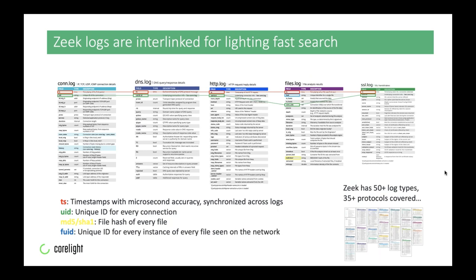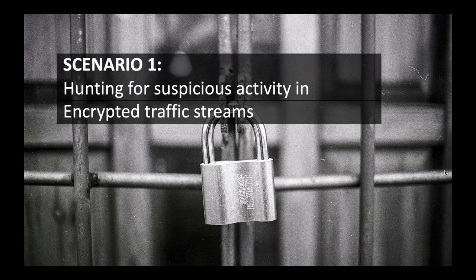Zeek is an interlinked logging framework - it's connection-oriented. It looks at network sessions and connections, generates logs, and stamps those connections with unique IDs so you can pivot across protocols. If someone establishes a connection, a connection log gets generated. If there's an HTTP session, an HTTP log gets generated with that same unique identifier. Security analysts can pivot through that and see the full spectrum of activity on the wire, making fast pivots across hashes, timestamps, or the unique connection identifier.